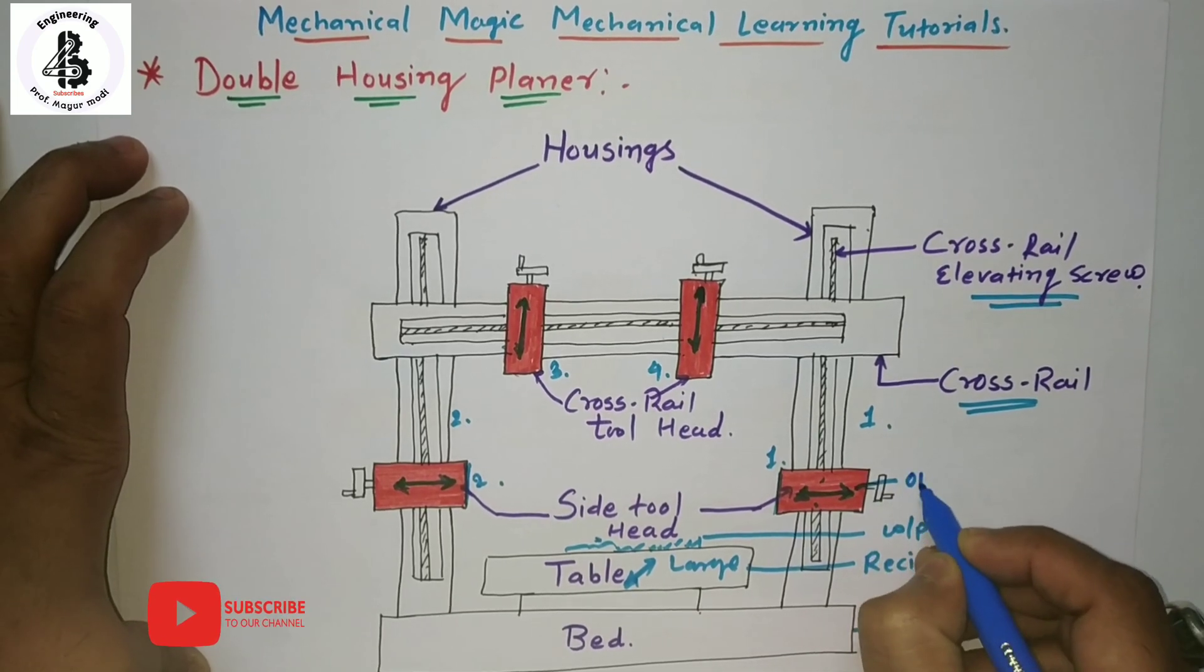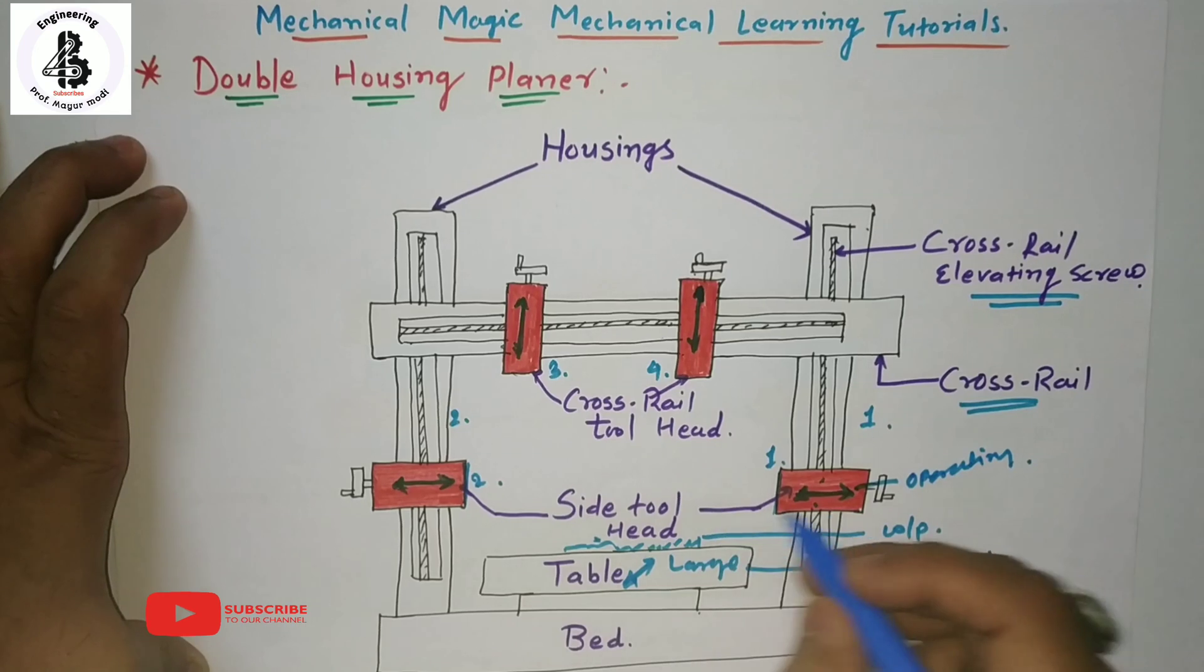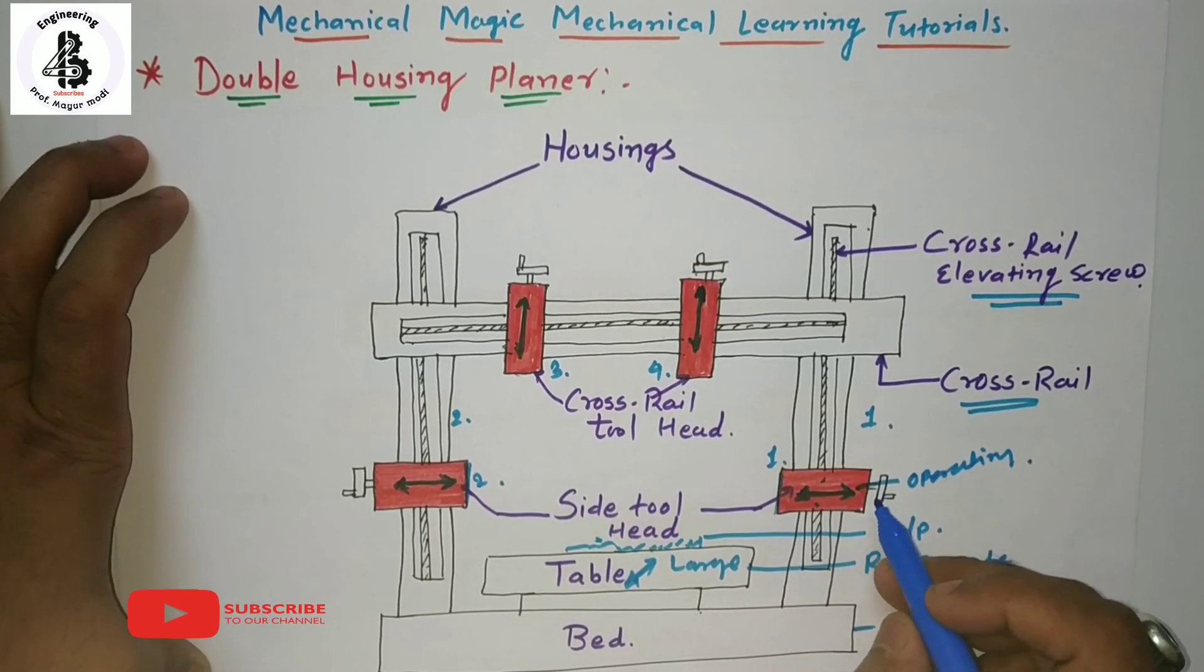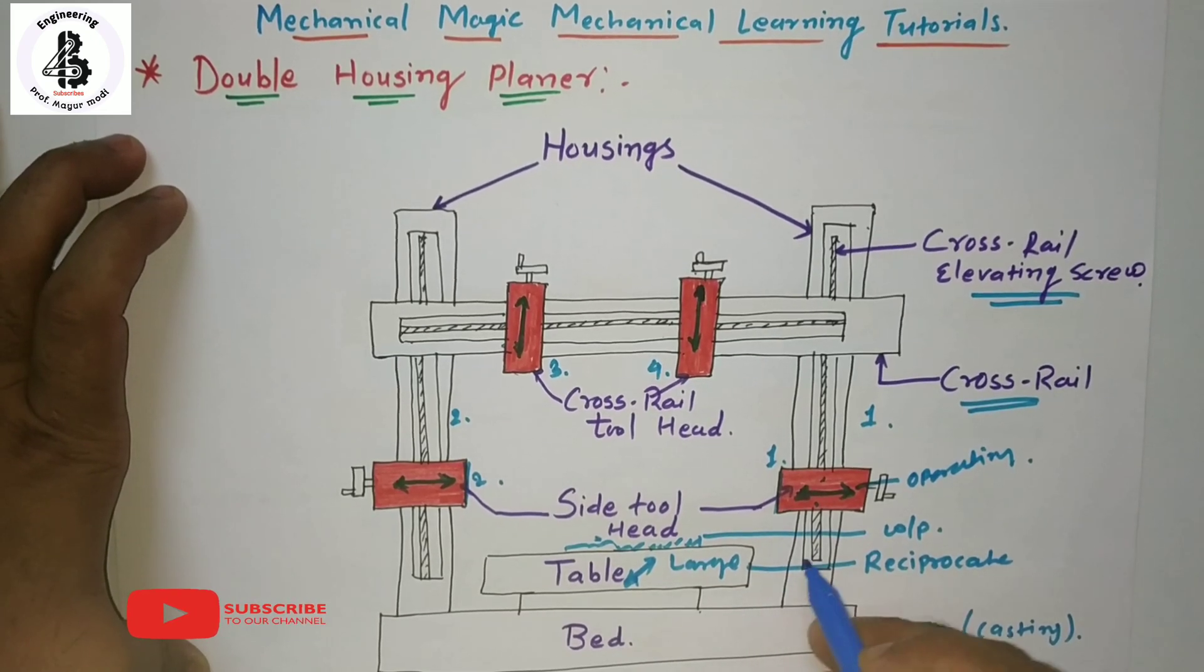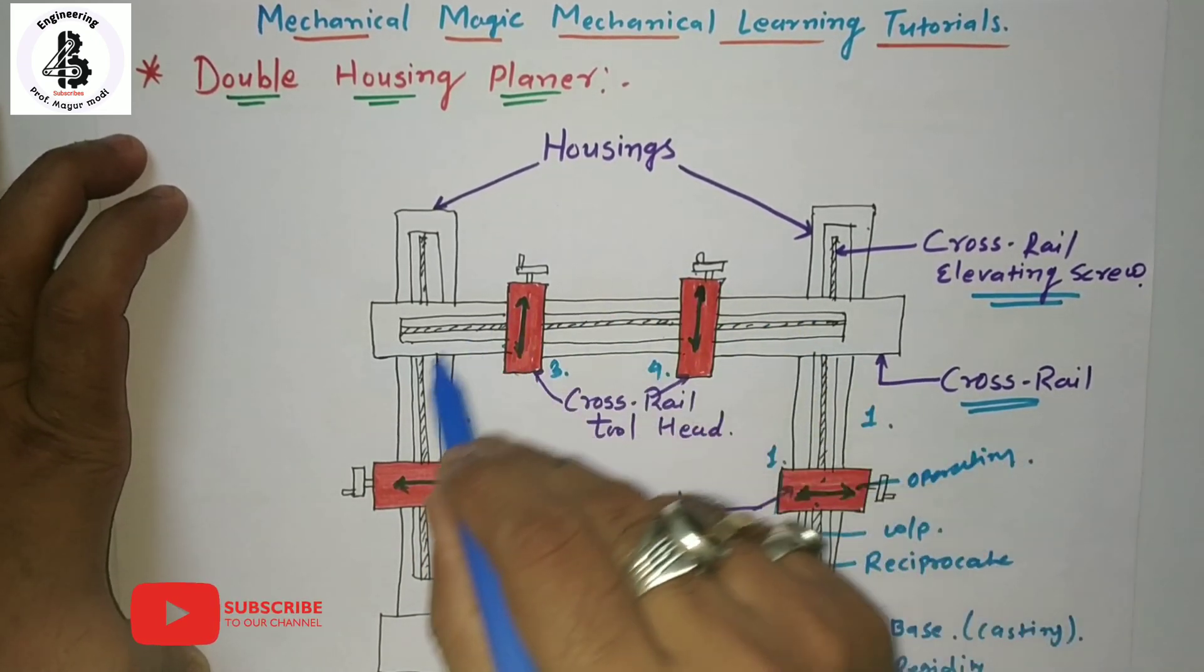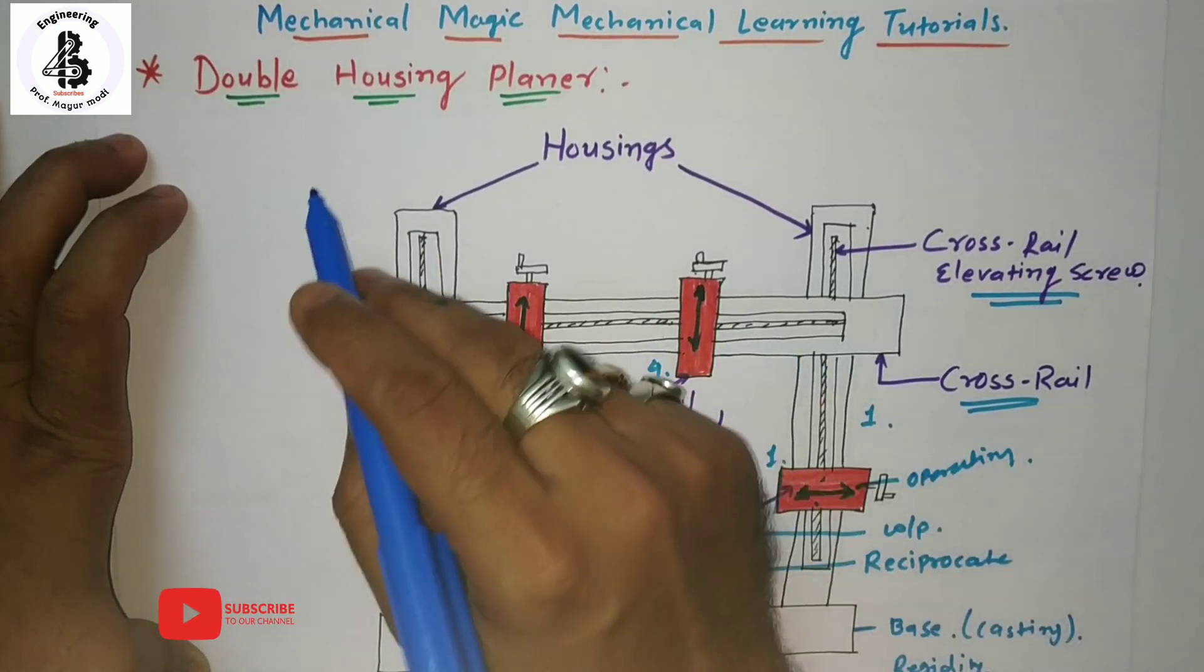The planner table may be driven by the mechanical movements or you can use the hydraulic device. That will be the all-in-one construction and parts of the double housing planner machines which will be having maximum industrial applications.